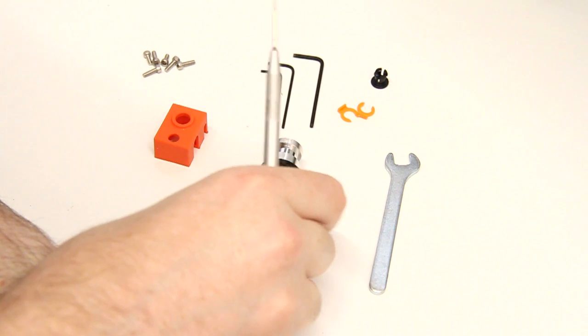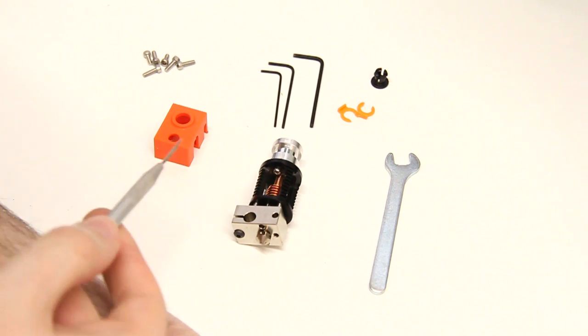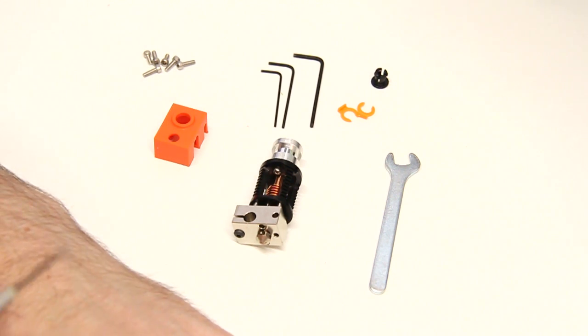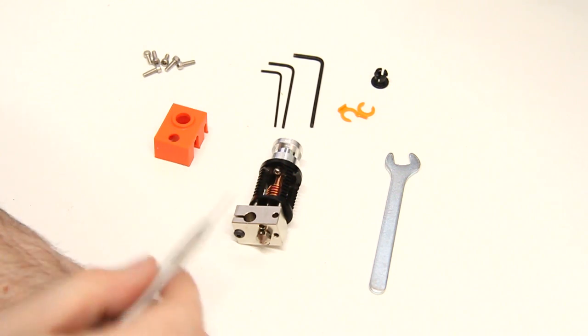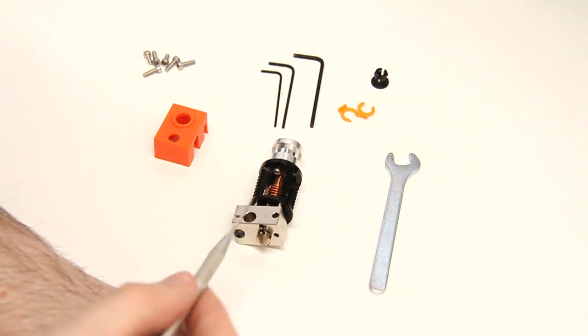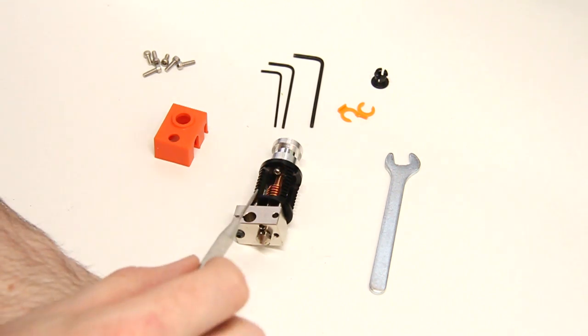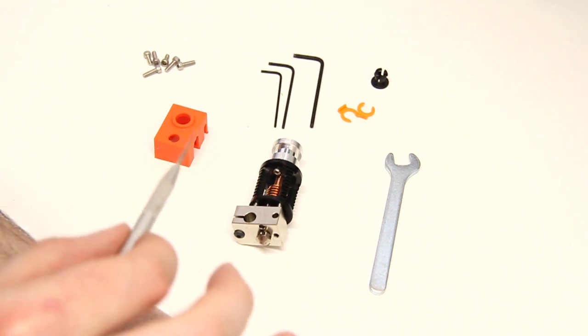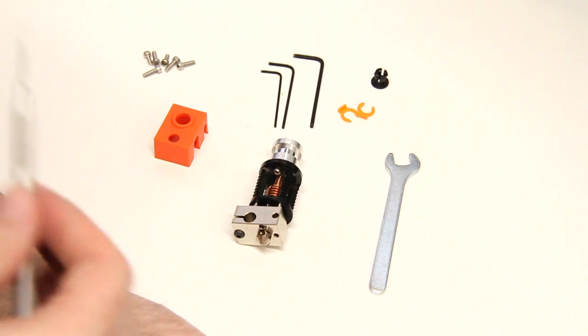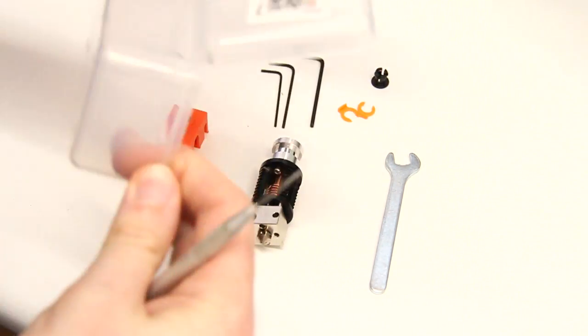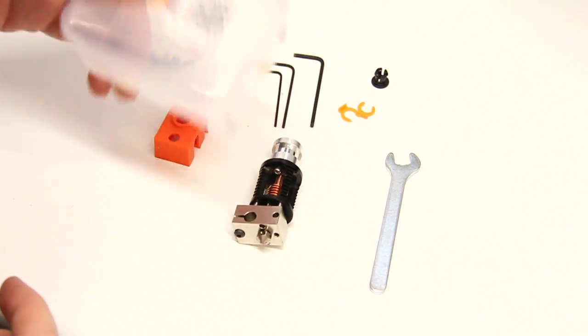So here is the Dragon hotend and this one is from Triangle Labs. There are a couple of different versions of this you can get. The standard flow and a high flow version. This particular one from Triangle Labs via Aliexpress literally comes in this clear box in about 5 different plastic bags which is a bit of a waste but there we go.